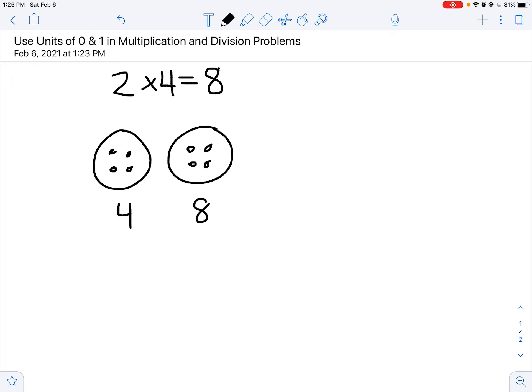Well, what if I asked you to take another one of our groups away? How would our multiplication sentence change now? Well, now we only have 1 group. And 1 times 4, 1 group of 4, is simply 4.